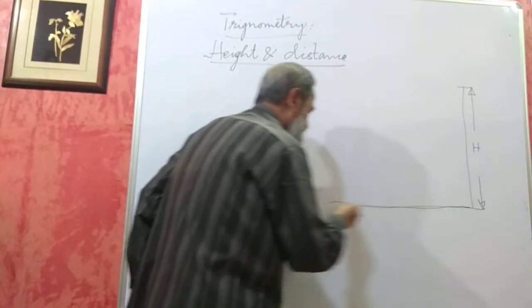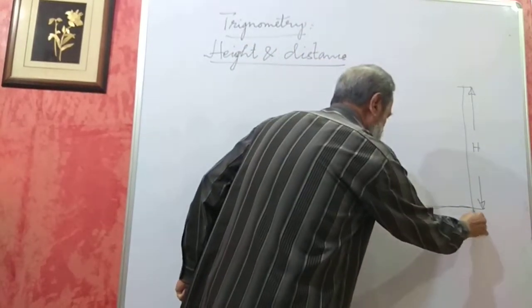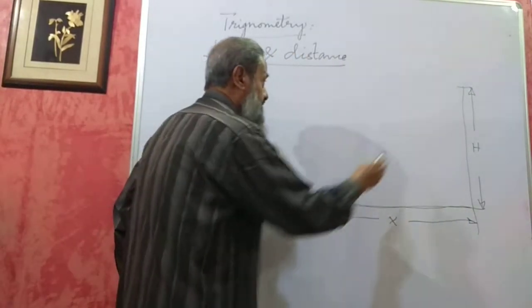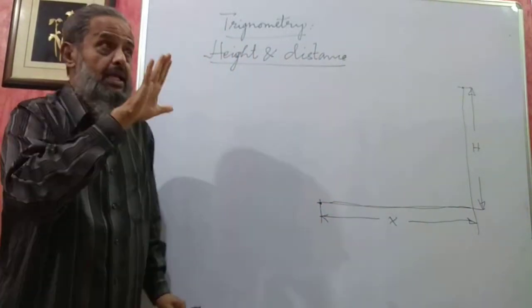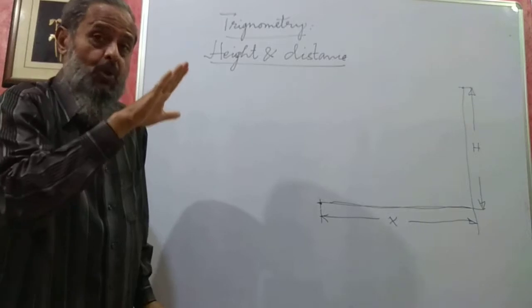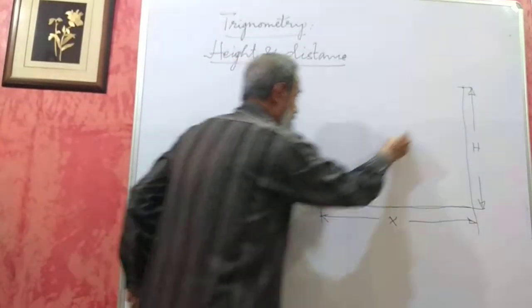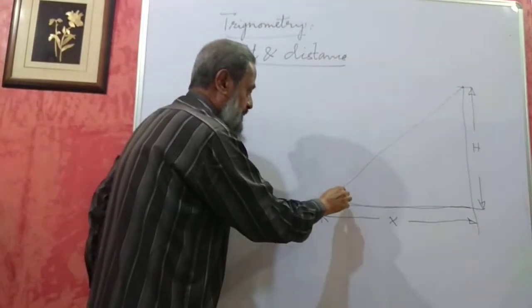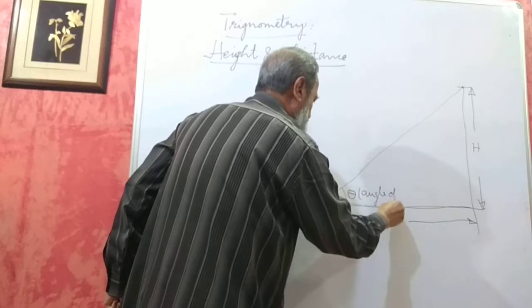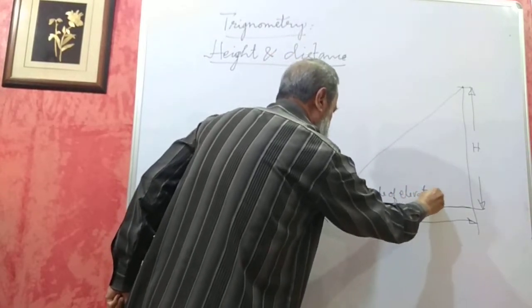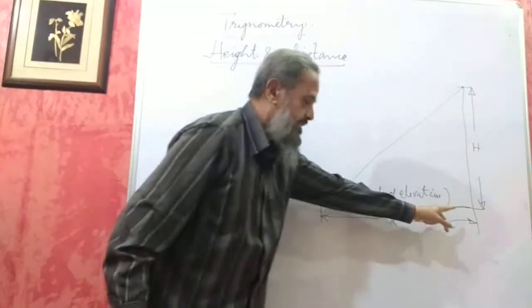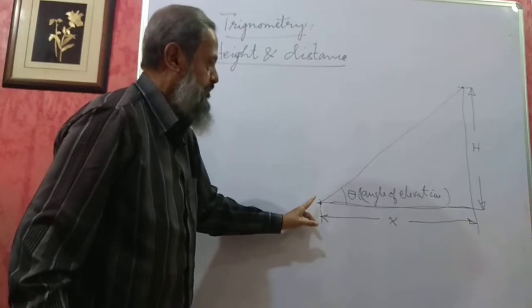How do I do it? This is the ground. At some known distance X, if I stand as the observer and look at the top of the tower, my line of sight should be inclined upwards. It makes an angle with the horizontal. This angle is called the angle of elevation. If I know this angle of elevation theta, and the distance from the foot of the tower to where I am standing, this becomes a right angle triangle.